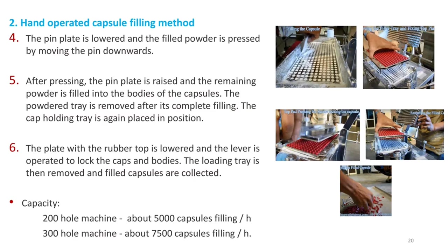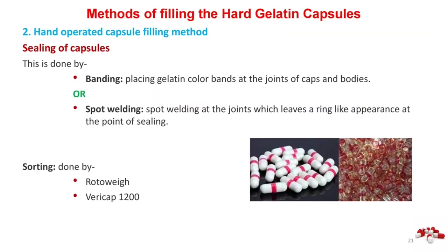Capacity of 200-hole machine: about 5,000 capsules filling per hour. Sealing of capsules is done by banding — placing gelatin color bands at the joints of caps and bodies — or by spot welding at the joints, which leaves a ring-like appearance at the point of sealing.